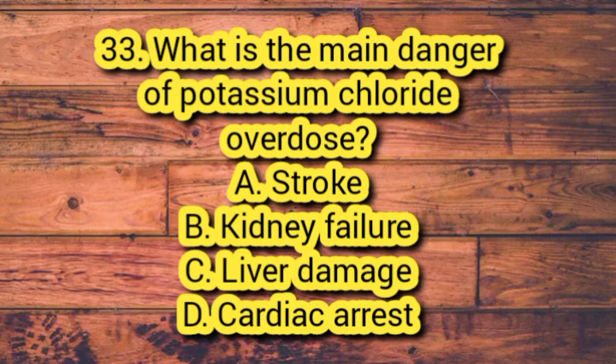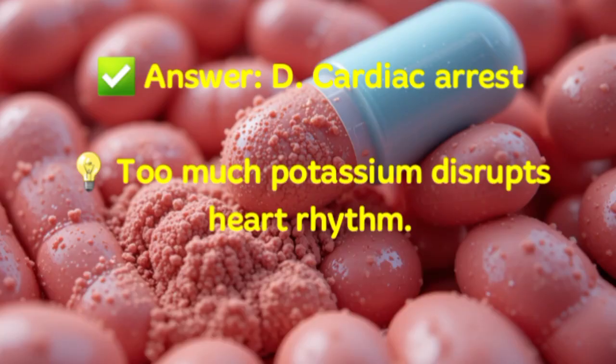Question 33. What is the main danger of potassium chloride overdose? A. Stroke. B. Kidney failure. C. Liver damage. D. Cardiac arrest. Answer: D. Cardiac arrest. Too much potassium disrupts heart rhythm.